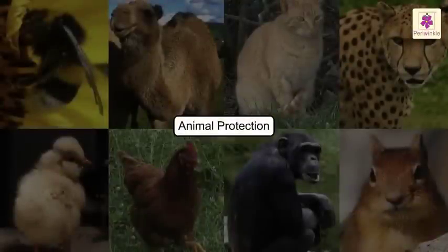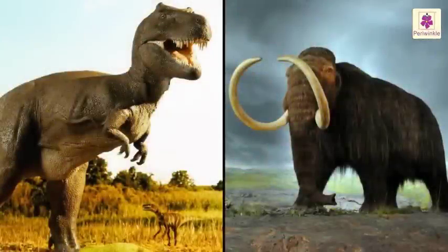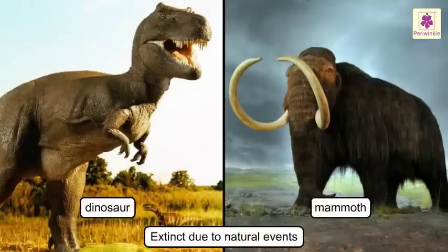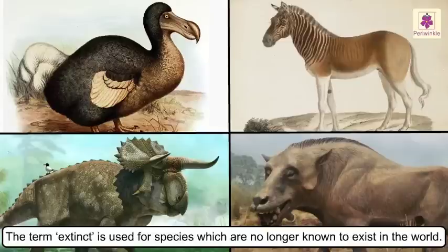Now let us learn how we can protect these animals. Huge animals like the dinosaurs and the mammoth have become extinct centuries back due to natural events. The term extinct is used for species which are no longer known to exist in the world.